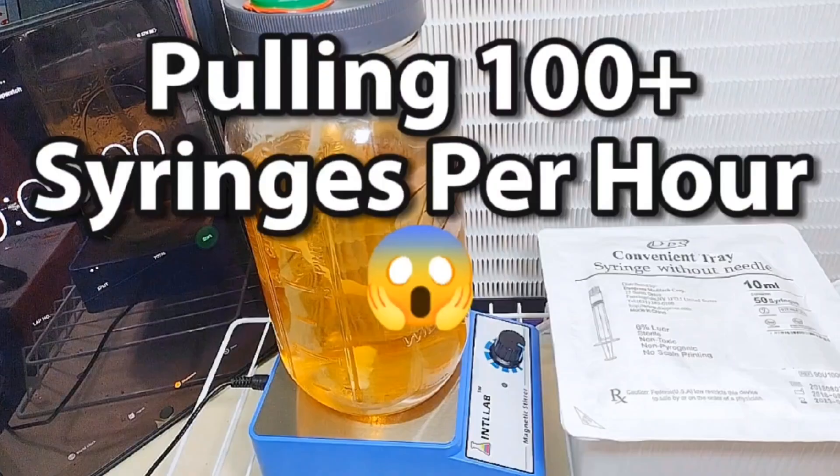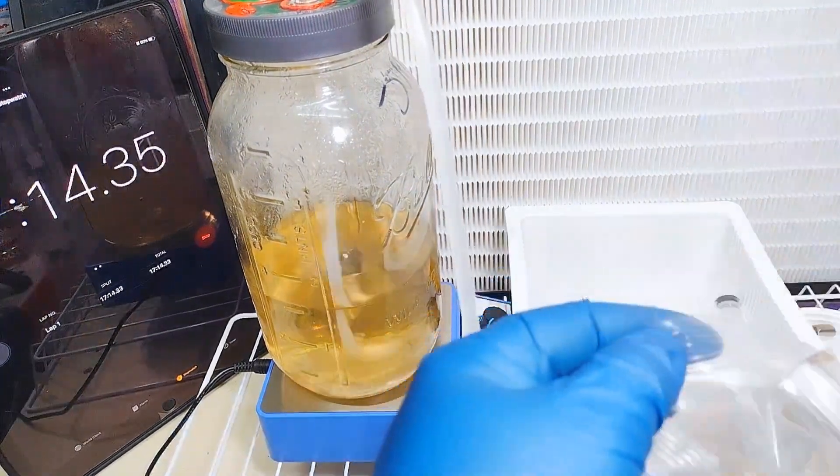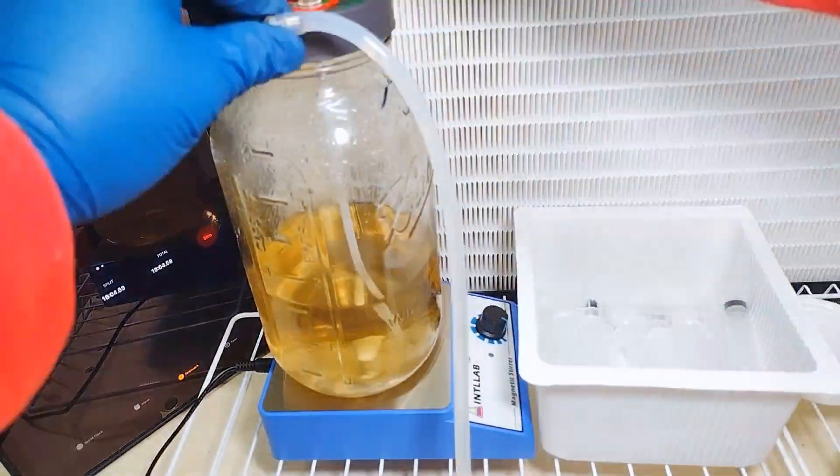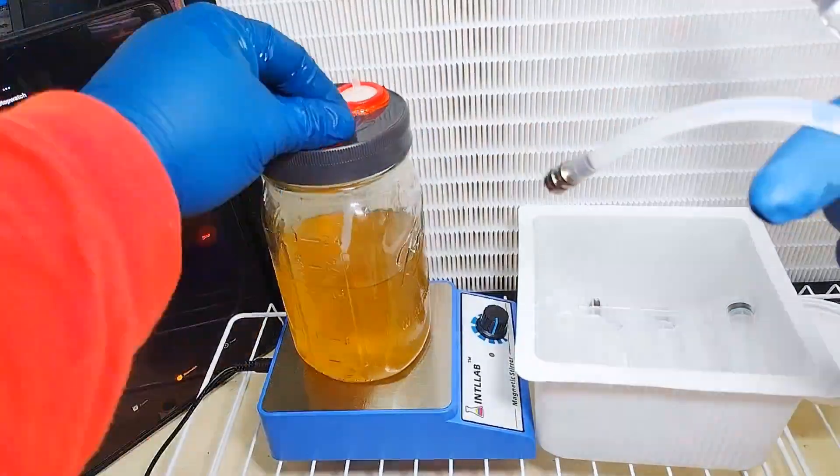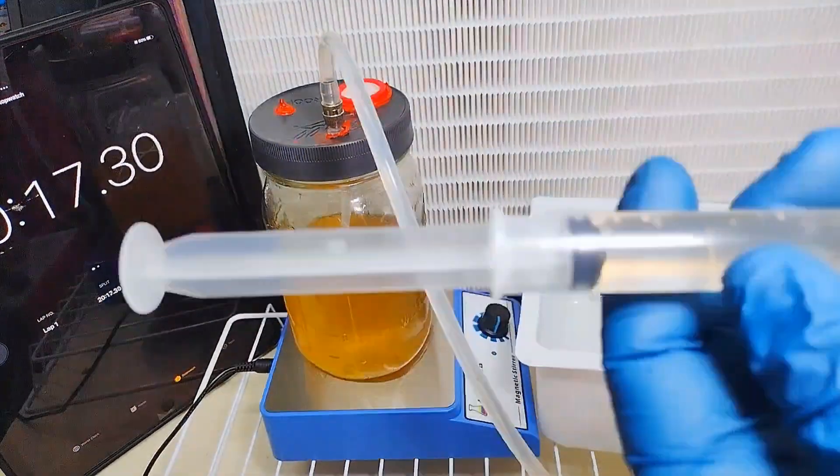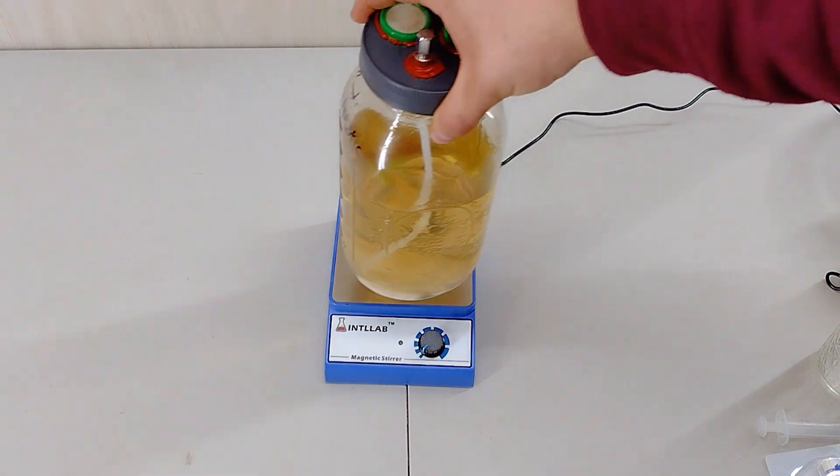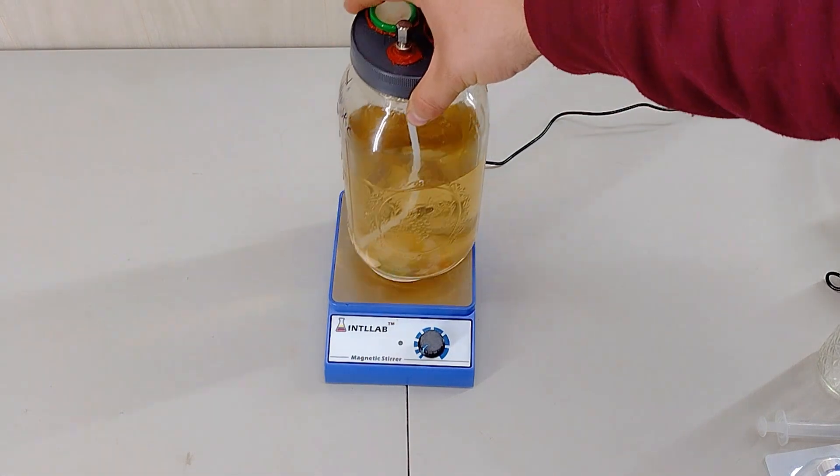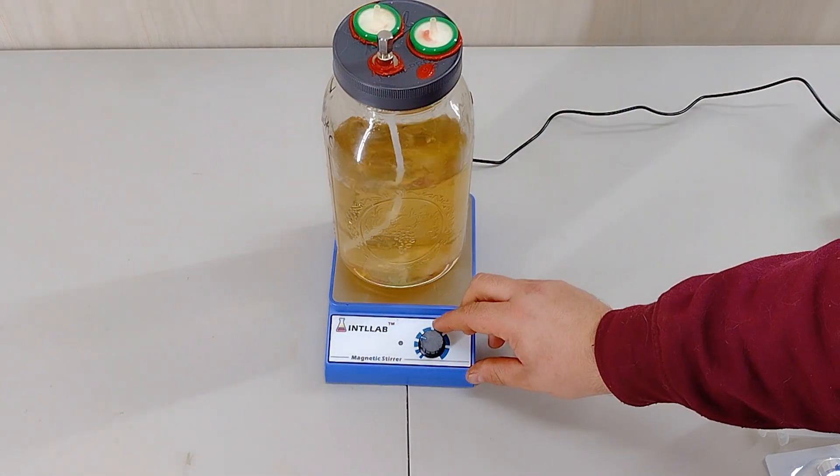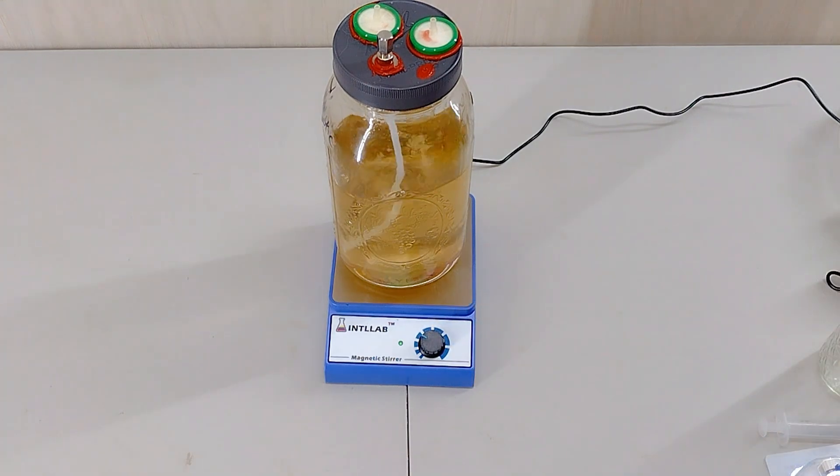Now, some of you will remember the video I posted pulling 100 syringes per hour. This is the exact tool that was used in making the video. Now, sit back and enjoy, and I'll show you exactly how I set this up. Now, besides making liquid culture and spore syringes, you could also use it to inoculate bags as well, so keep that in mind while you're doing your stuff. Maybe you could speed up your process a little bit with this method.